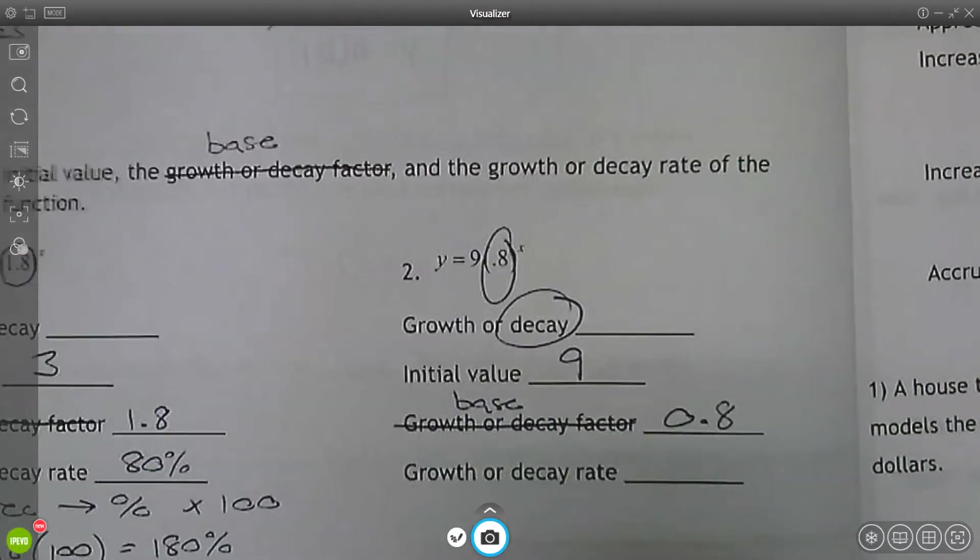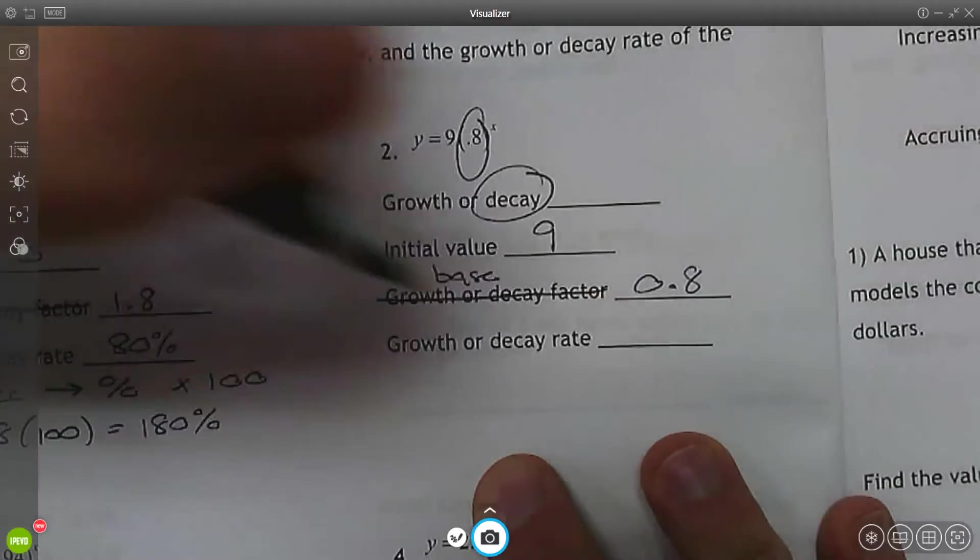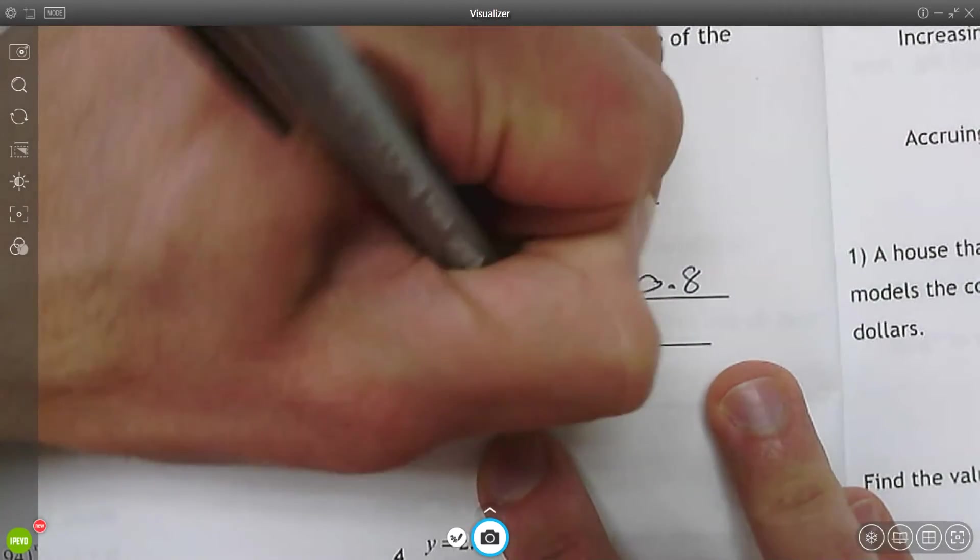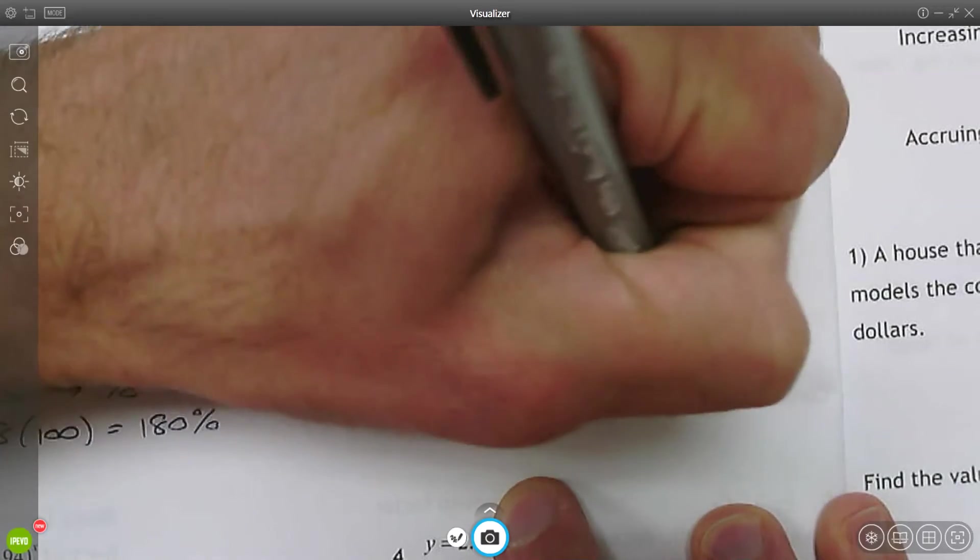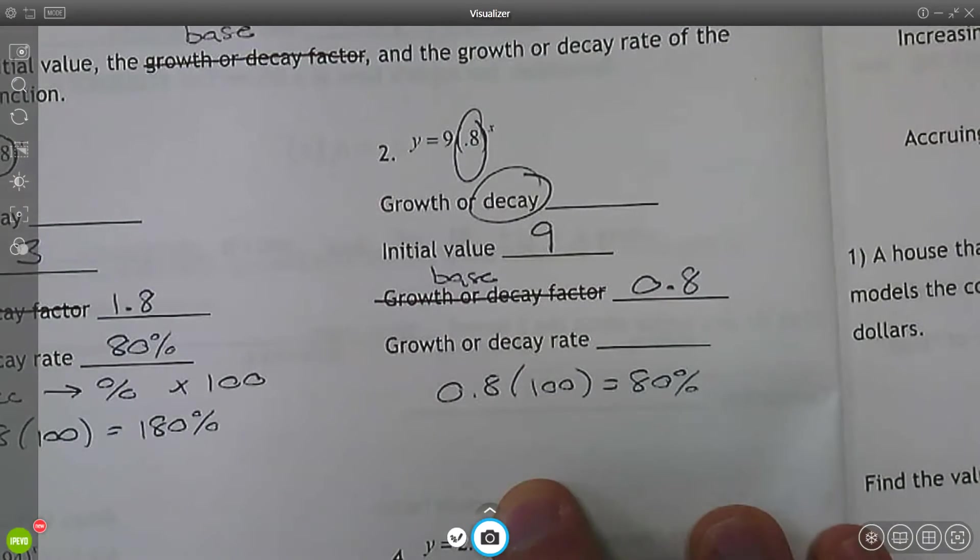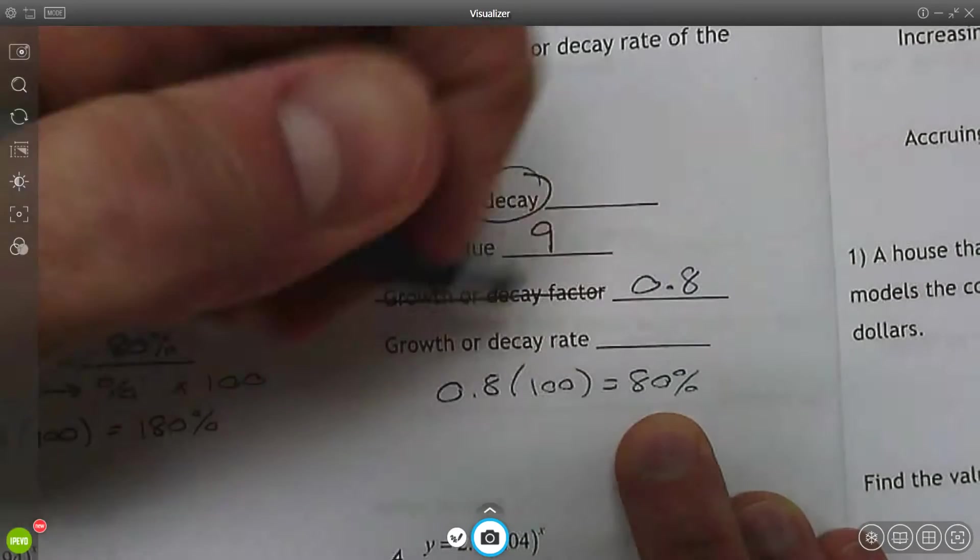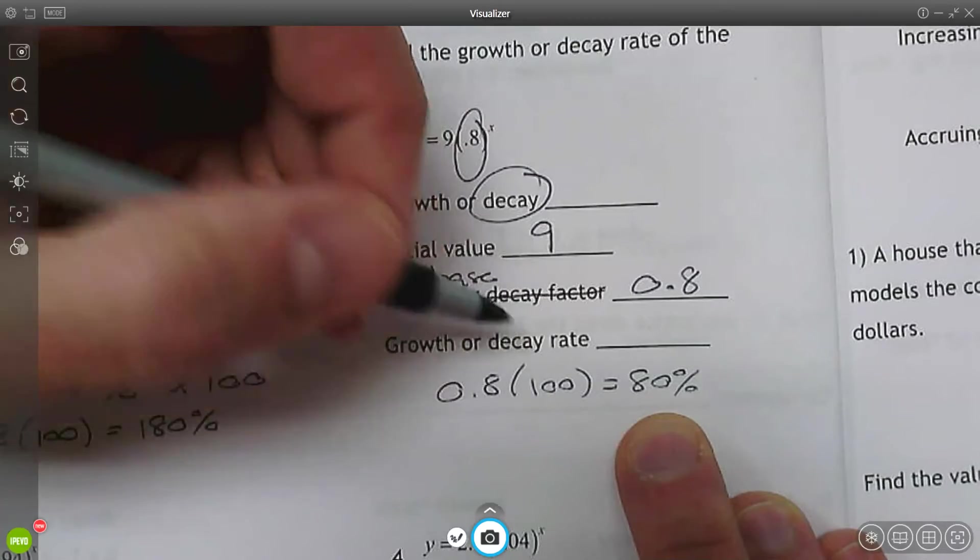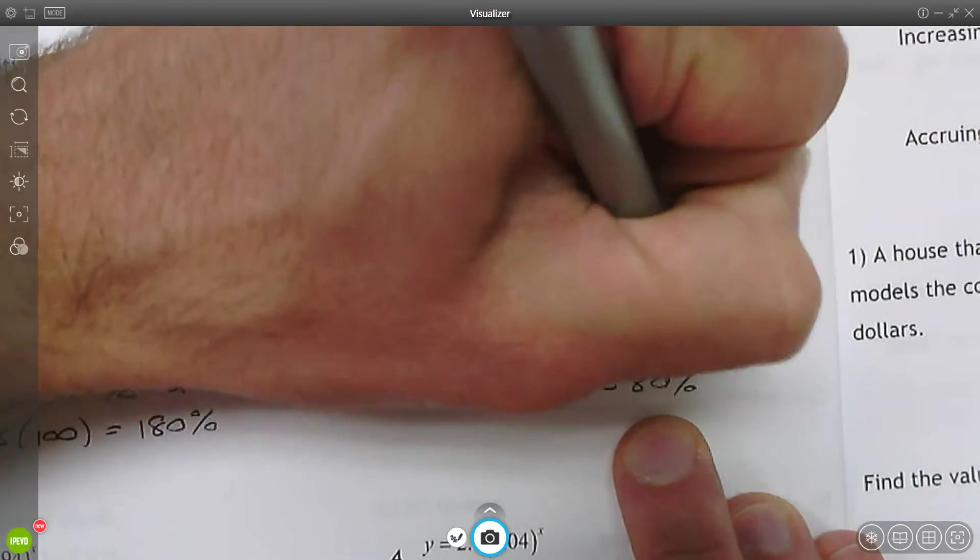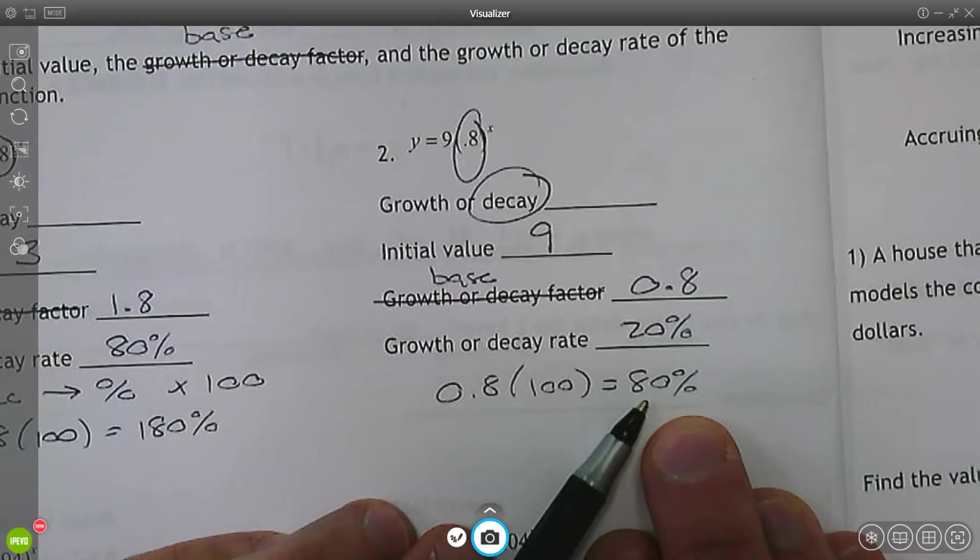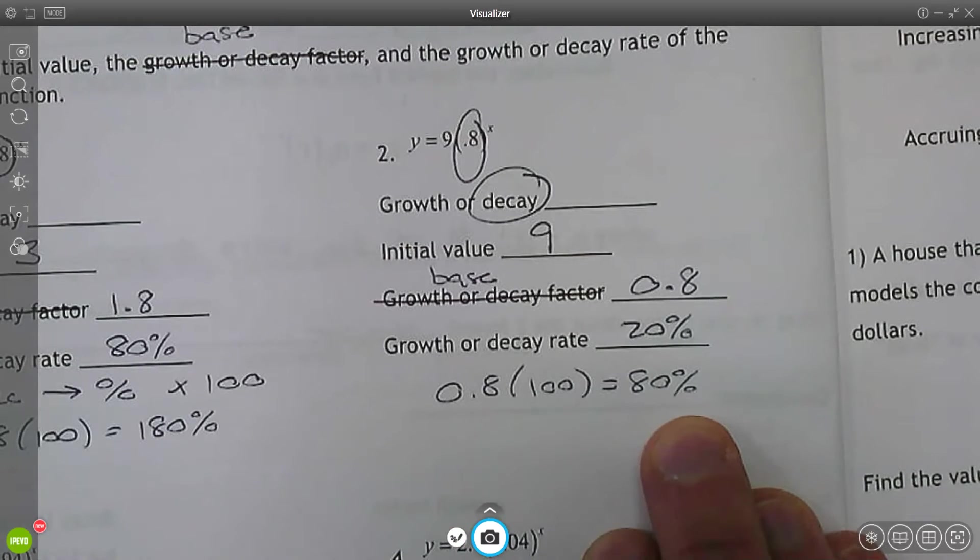And to find the rate, same thing that I did before, I'm going to convert this decimal to a percent by multiplying by 100. So 0.8 times 100 is 80%. We always start with 100. So if I had 100% and now I'm down to 80%, the rate is what's gone. I lost 20%.